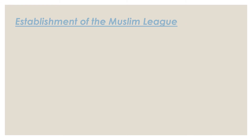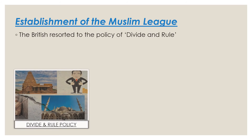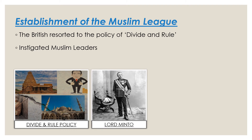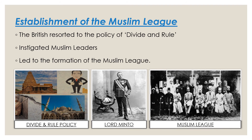Let us look at the other policies of the British. Not only did the British resort to suppressive policies, but they also created a divide between the Hindus and the Muslims. When the Indian National Congress was originally formed, many Muslims had joined it. But some Muslim leaders were instigated by the British and were made to believe that the Hindus were a threat to them and that Muslims should have their own separate party. Encouraged by the British government, a delegation of upper-class Muslims led by Aga Khan met the Governor General Lord Minto, and an organization called the Muslim League was formed.